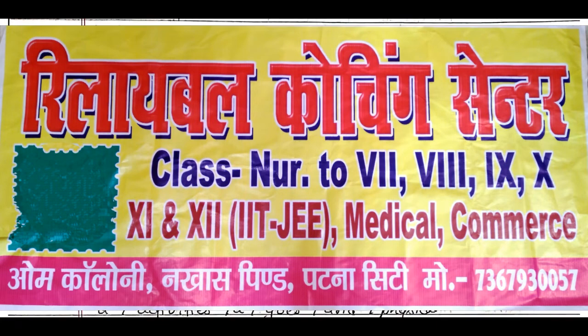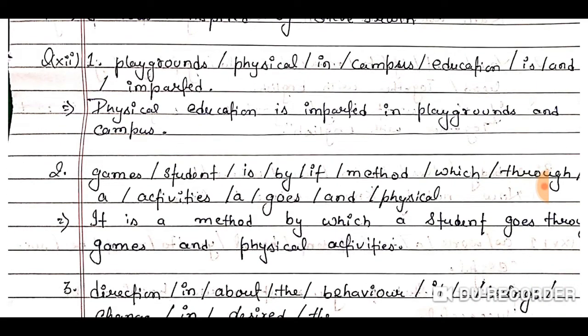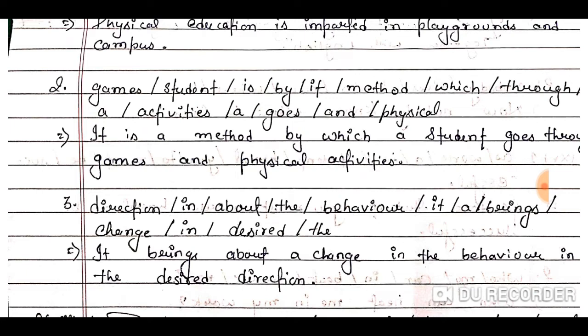Next, question number 12: playgrounds / physical / in / in campus / education / is / and / imparted. The subject here is 'physical education'. Then the auxiliary verb 'is' followed by the third-form verb 'imparted'. So the correct answer is: Physical education is imparted in playgrounds and campus.